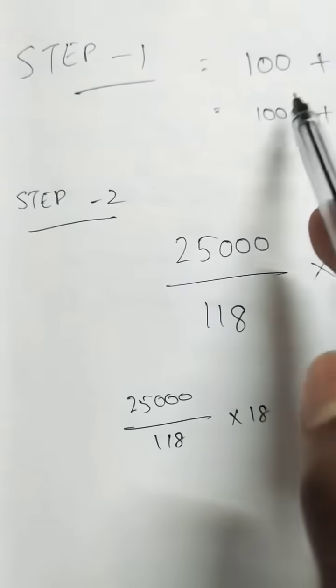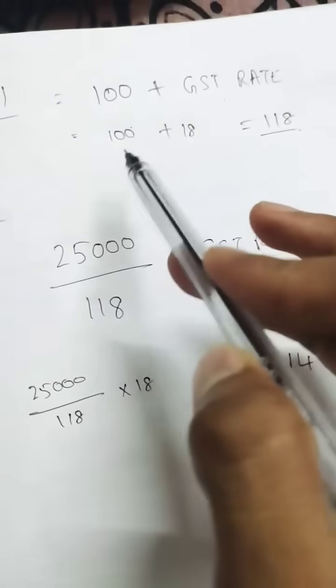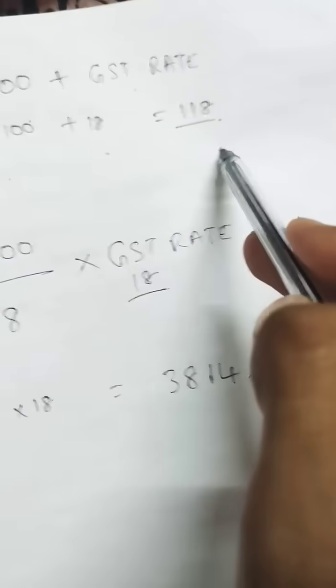Step 1: For the 100, add the GST rate. That is 100 plus 18, which gives 118.